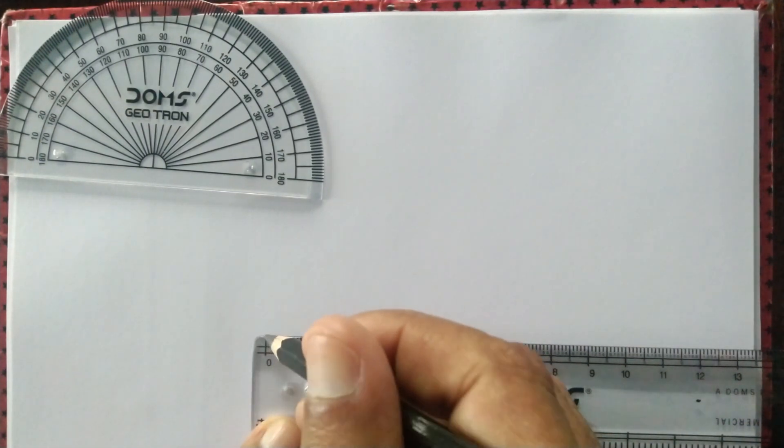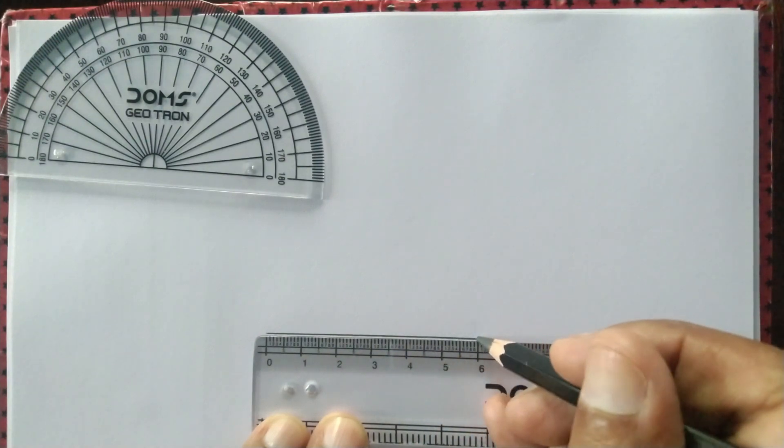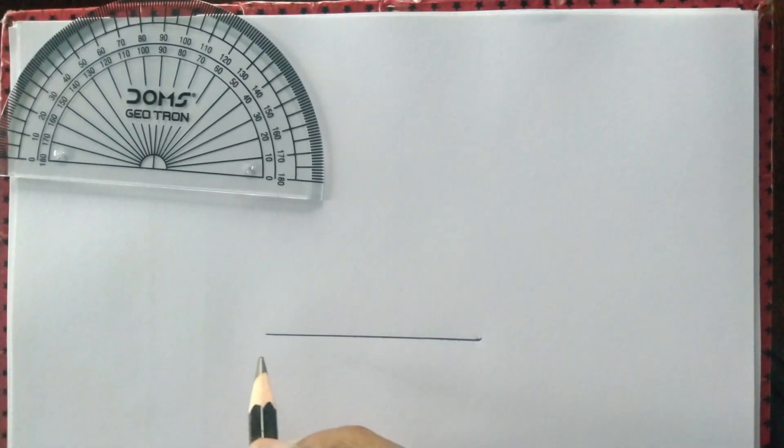First step, we draw a line segment that measures 6 cm. We want to draw an equilateral triangle with sides measuring 6 cm, so we draw a line segment that measures 6 cm. Let's call this line segment AB.